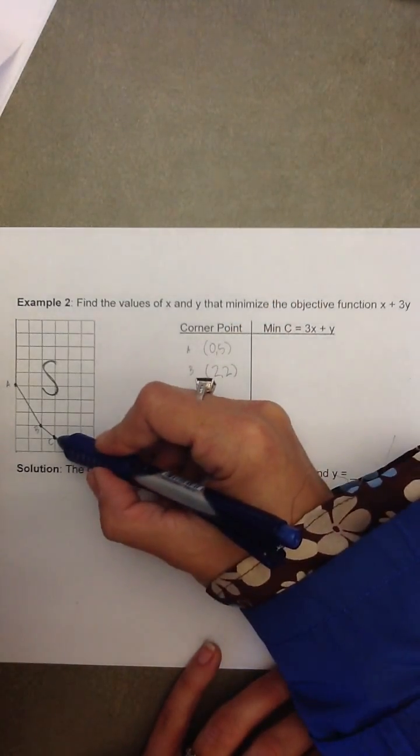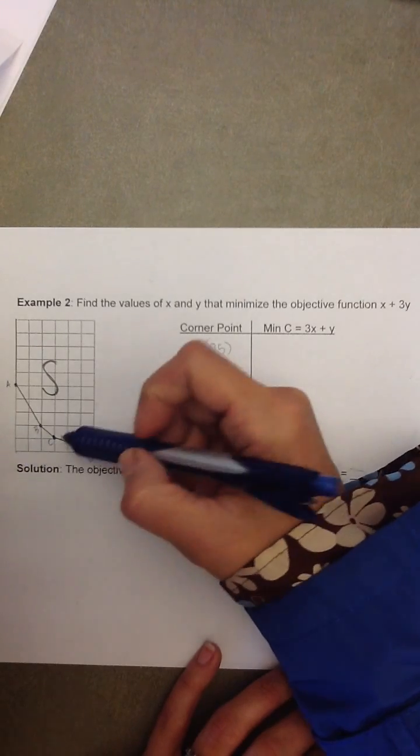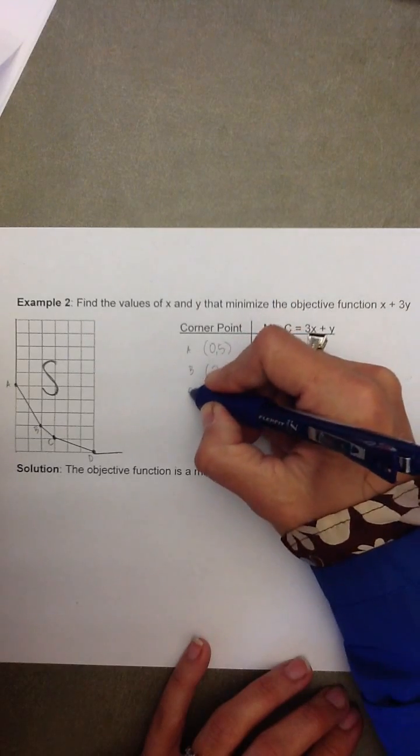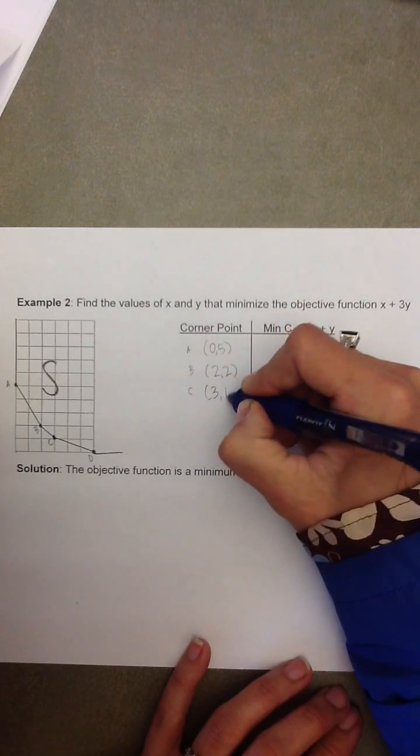The next ordered pair we're looking for is corresponding to the point C. So, we go right 1, 2, 3 and up 1. So, C is the ordered pair 3, 1.